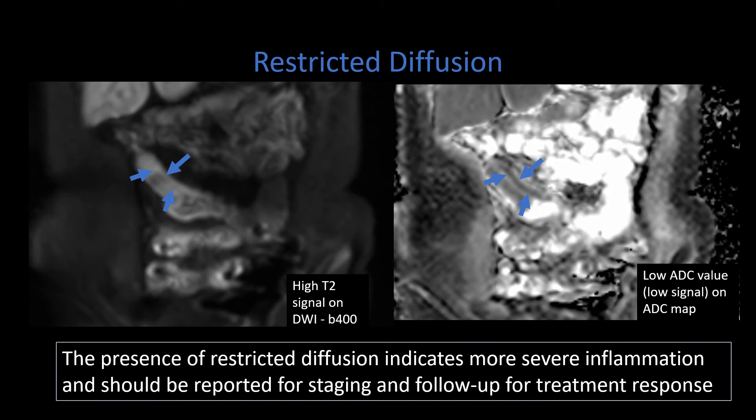You can also see restricted diffusion. There has been a lot of research on using restricted diffusion to grade the degree of inflammation. We can see here a region of active inflammation in the distal ileum, with high signal on high B-value DWI imaging within the bowel wall corresponding to low signal on the ADC map.